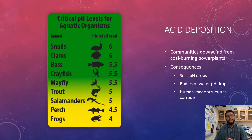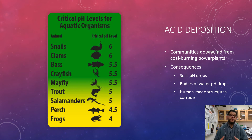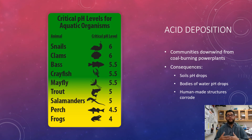Especially the most important ones are going to be those that are aquatic. When that rain drops and falls down into the water, that's going to lower that pH. So things like snails, clams, crayfish, mayflies, trout, and of course your amphibians like salamanders, they're going to be in critical condition because of that as well.